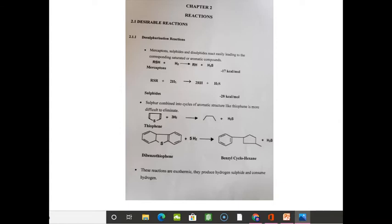The desulfurization reactions: mercaptans, sulfides, and disulfides react easily leading to corresponding saturated or aromatic compounds. RSH + H2 gives RH + H2S. RSR + 2H2 gives 2RH + H2S. Sulfides combined into cycles of aromatic structure like thiophene are more difficult to eliminate. Thiophene + 3H2, dibenzothiophene + 5H2 gives benzylcyclohexane. These reactions are exothermic and produce hydrogen sulfide while consuming hydrogen.